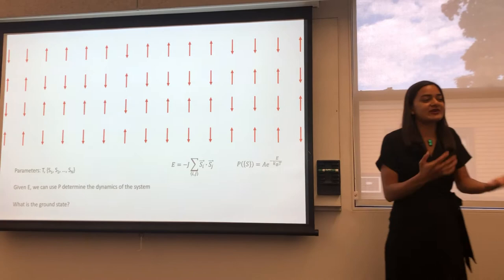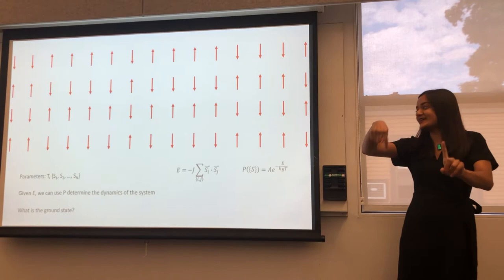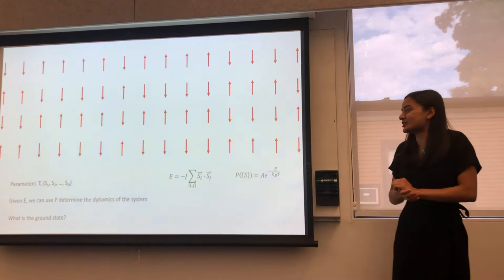So let's think about what happens or how we can minimize the energy of the system. Well, if me and my neighbor both point up, then we can take the dot product and we'll find that our energy is equal to negative J, because the dot product is one. But if me and my neighbor are anti-aligned, the dot product is negative one, and so we have positive J as our energy. And so the ground state of the system is going to be one in which all of the spins are aligned, either pointing up or pointing down.